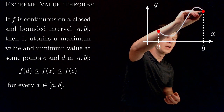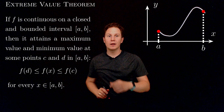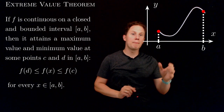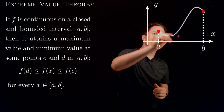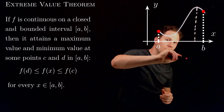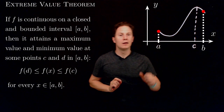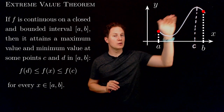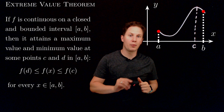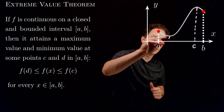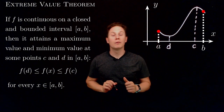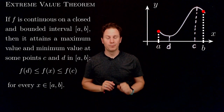That point, namely here along the x-axis at c, is where the function takes on a maximum value. And there will be at least one point between a and b along the x-axis, namely here at d, where the function takes on a minimum value.